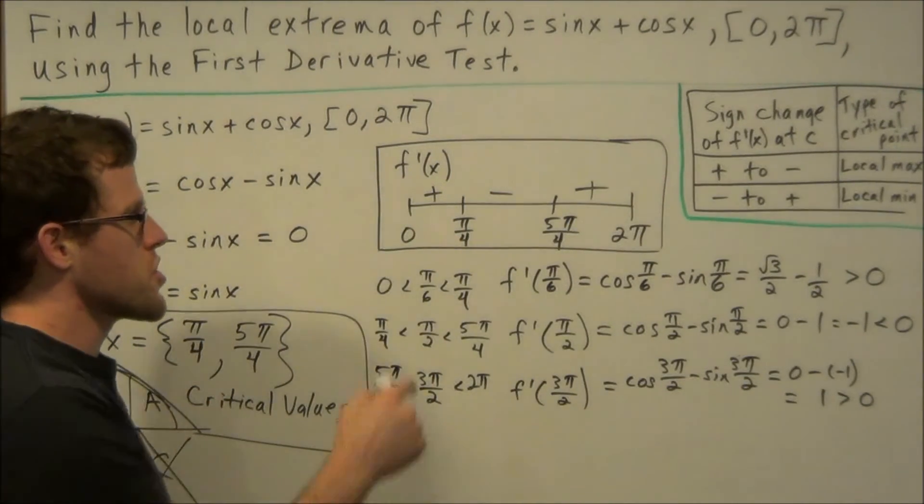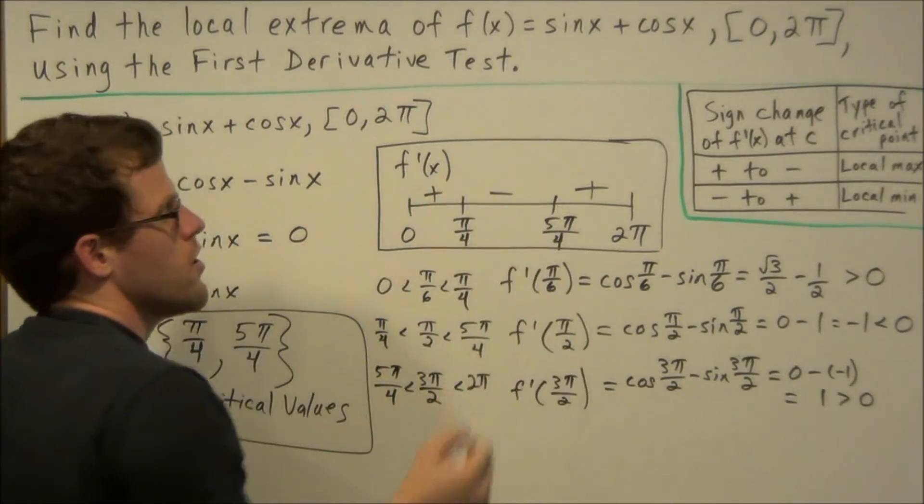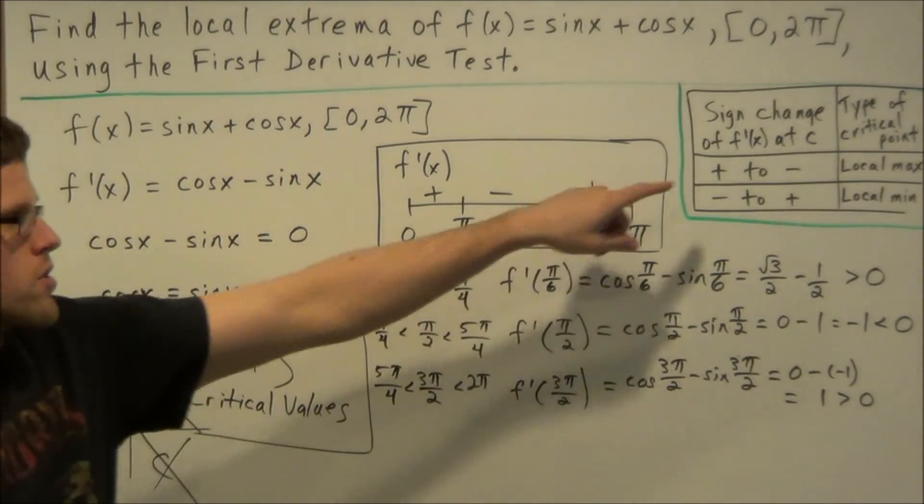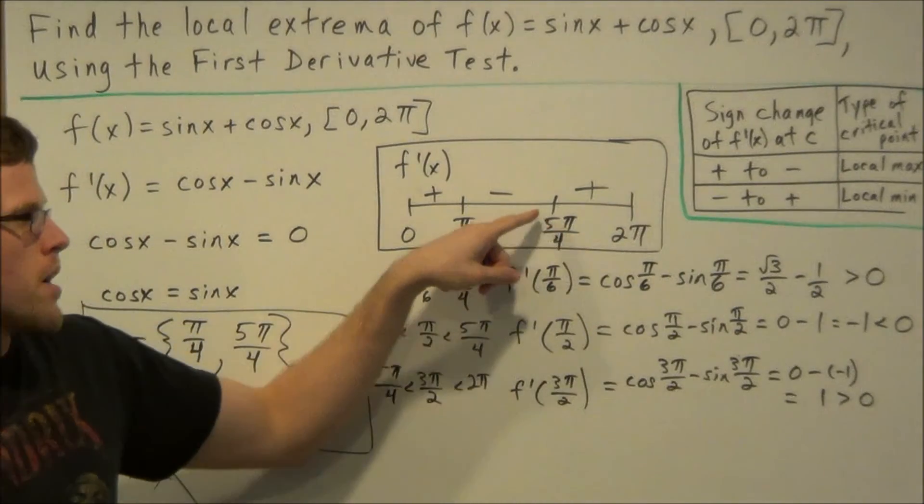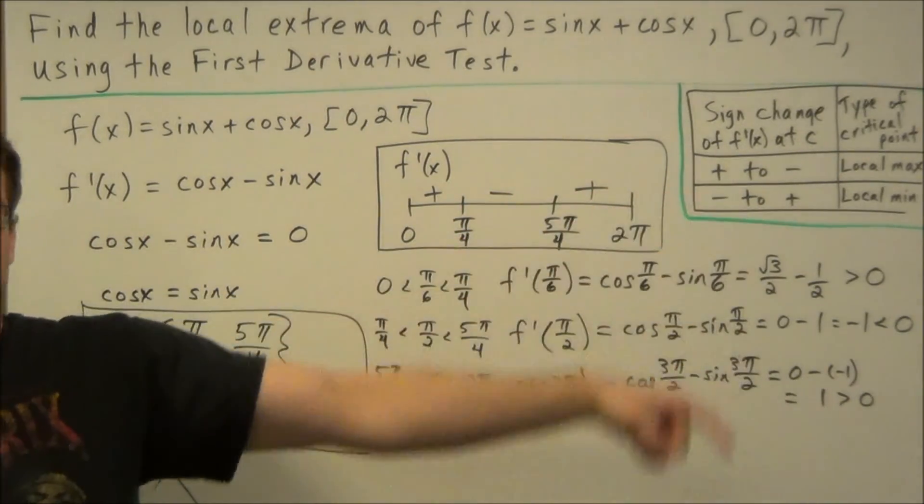So now we analyze this and notice that at π/4, there's a change in the first derivative from positive to negative, which tells us at π/4 we have a local max. And at 5π/4, the change from negative to positive tells us we have a local min.